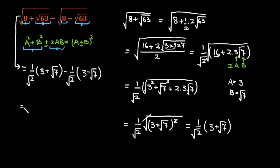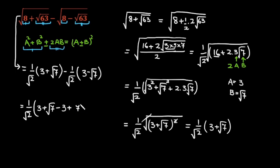This is further equal to: taking 1 over √2 as common, so this is 1 over √2 inside the bracket: (3 + √7) minus (3 − √7). This minus sign will change the sign inside the bracket, so this becomes (3 + √7 − 3 + √7). The +3 and −3 cancel, so this is equal to 1 over √2 times (√7 + √7), which is 2 times √7.